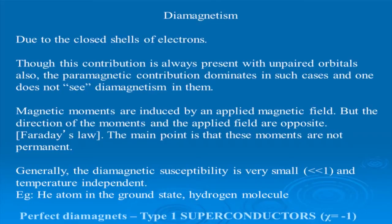The diamagnetic susceptibility formula shows it is proportional to Z times the mean square radius ⟨r²⟩ and is always negative and very small compared to 1. Examples include hydrogen molecule. Superconductors are perfect diamagnets where the susceptibility is exactly −1 — corresponding to the Meissner effect, where the applied field is completely expelled below the critical temperature.